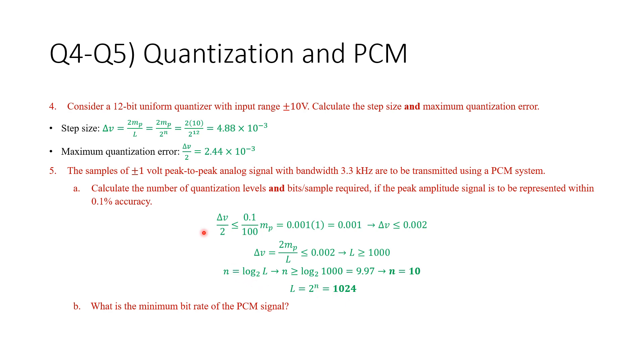The last part here, what is the minimum bit rate of this PCM signal? We know how many bits per sample. We need to know what's the minimum number of samples per second. We can use this Nyquist criteria for this. So, we have 6, twice the highest frequency, which is 6.6 kilo samples per second, times 10 bits per sample. And then we get 66 kilobits per sample.